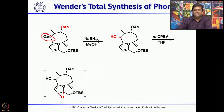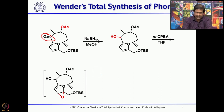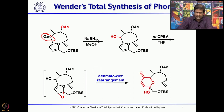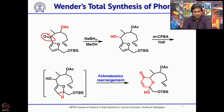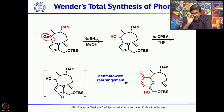Once the alcohol was in hand, it was treated with MCPBA. MCPBA first forms the epoxide, which then undergoes a Meisenheimer (Achmatowicz) rearrangement — a reaction previously discussed in the context of eletrobin. This gives the gamma-hydroxy pyranone, setting up the next key step: the oxido-pyrilium–alkene cycloaddition.